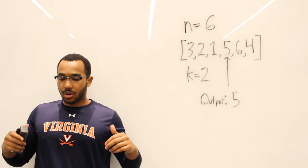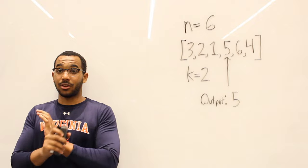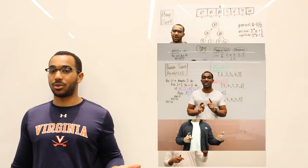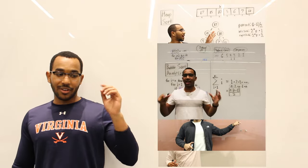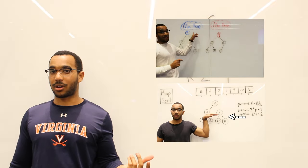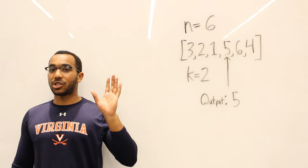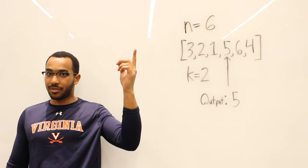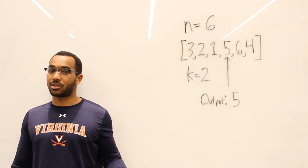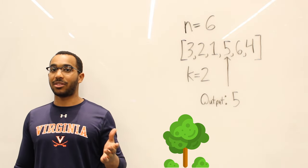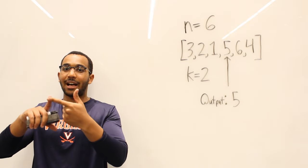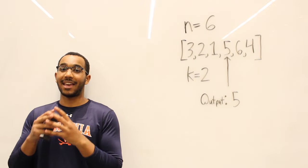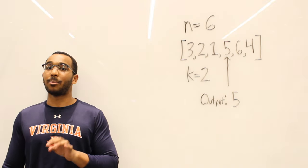We already know every single thing we need to know for this problem. On this channel we've covered every fundamental sorting algorithm, how heaps and binary heaps work, and especially quicksort — which is going to be useful because of its partitioning scheme. We've covered how to analyze recursive time complexities and recurrence relations using the tree method. We're going to tie all of that together in this video.